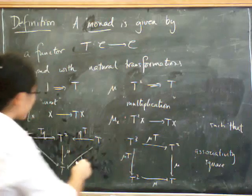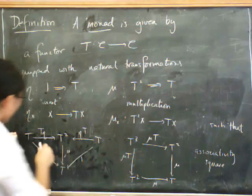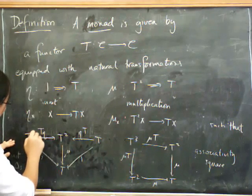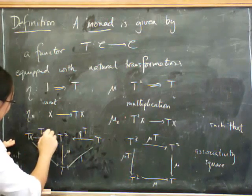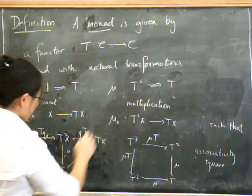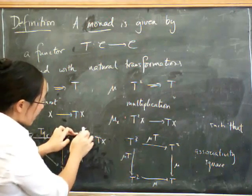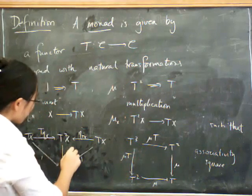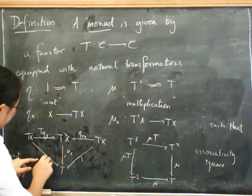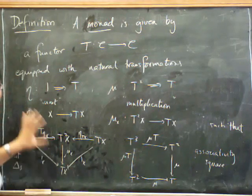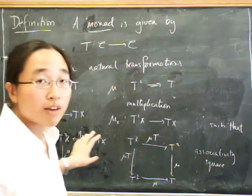which I'm just going to rewrite it literally now, saying what it means on components. So this one says that if you start with T of x, and you do T of eta of x, going to T squared of x. Here that says, now eta T on components is the components of eta at T of x. So after that, you do mu of x. This is the identity morphism on x. That's the identity morphism on x. So this is now an honest-to-god commutative diagram in the category C.